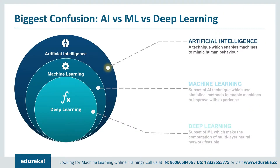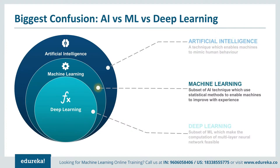Let's move on and discuss one of the biggest confusions: people think that AI, machine learning, and deep learning are all the same — they are wrong. Artificial intelligence is a broader concept of machines being able to carry out tasks in a smarter way. It covers anything which enables the computer to behave like humans. Think of the famous Turing test to determine whether a computer is capable of thinking like a human being. If you are talking to Siri on your phone and you get an answer, you are already very close to it.